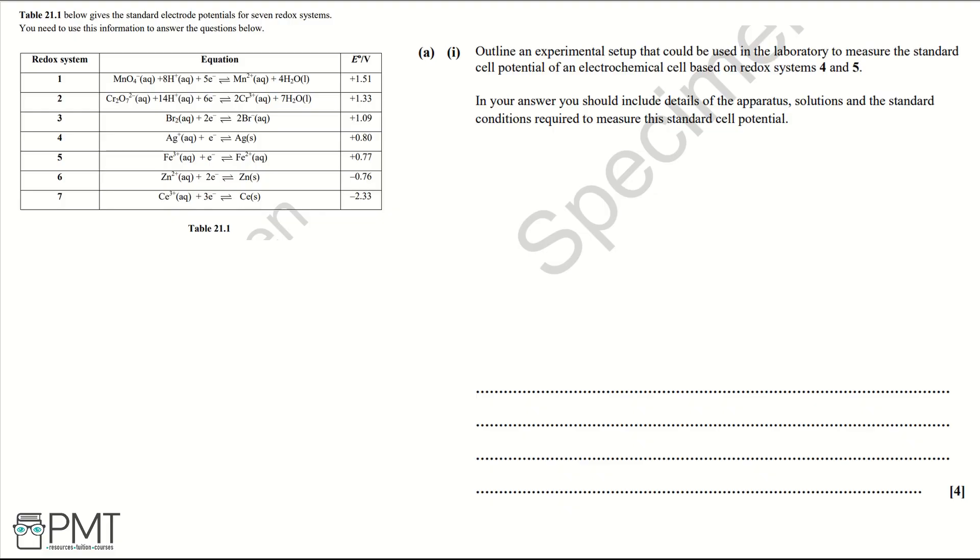Part 1: Outline an experimental setup that could be used in the laboratory to measure the standard cell potential of an electrochemical cell based on redox systems 4 and 5. In your answer you should include details of the apparatus, solutions, and the standard conditions required to measure this standard cell potential.